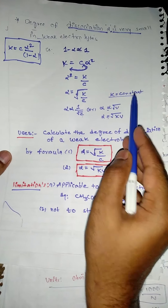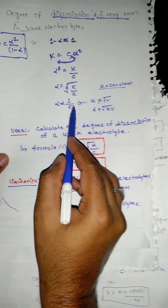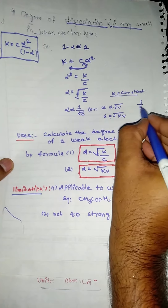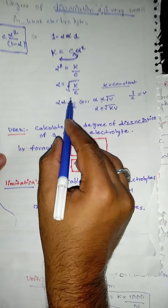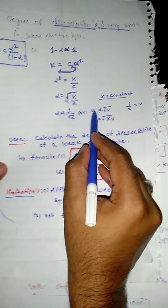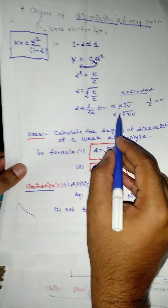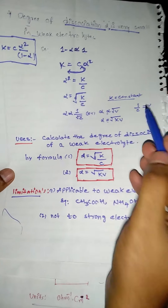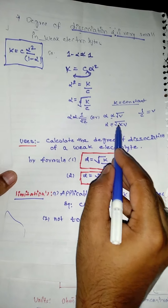Therefore, alpha = √(K/C). Since K is a constant, alpha is proportional to 1/√C. Since 1/C = V, alpha is directly proportional to √V. Taking the constant into account: alpha = √(K/C).